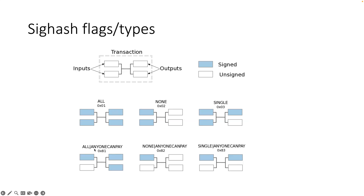ANYONE_CAN_PAY means the signature and script context only cover your own input — the input you are signing. Anything else, meaning other inputs, you don't control. Basically anybody else can change other inputs but not yours. This flag cannot be used alone — it's a combination flag that can be combined with any of the three output flags above. So in total that gives you six possibilities for the default sighash flags.